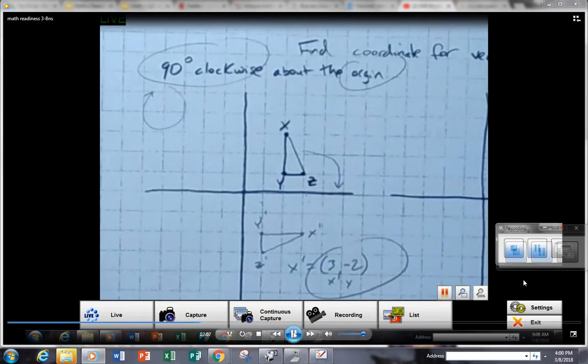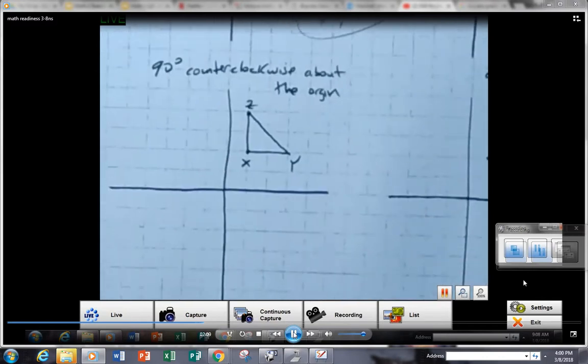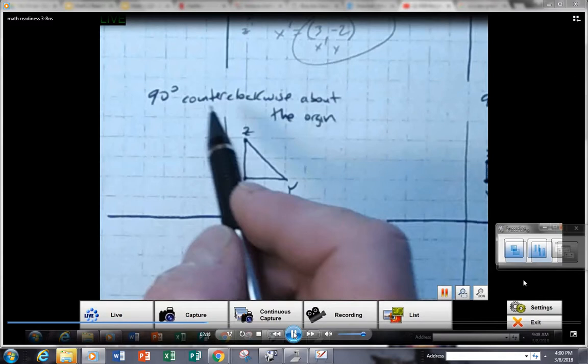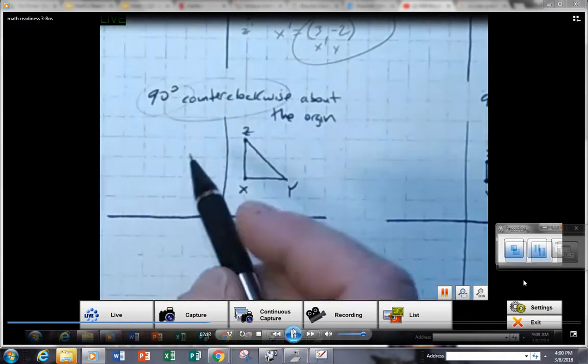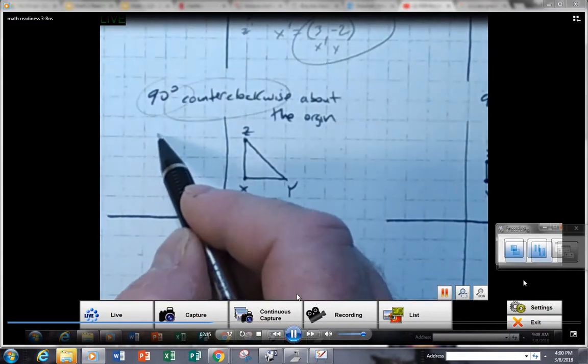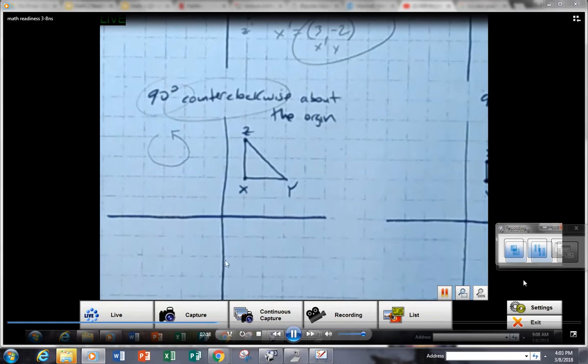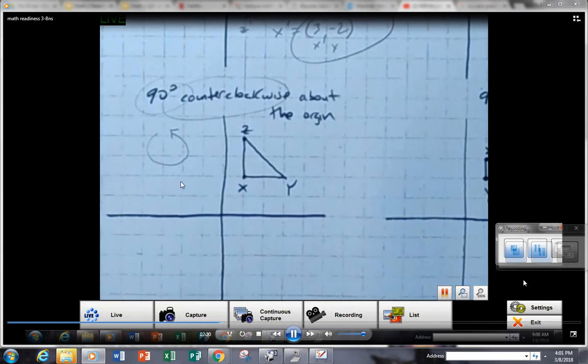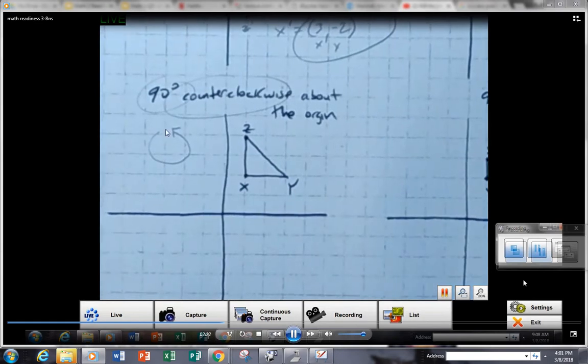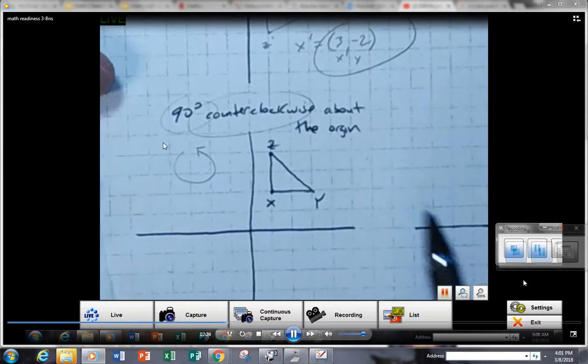And again, that is a quarter turn to the right. All right, the one underneath. Again, I'm going for this one, 90 degree quarter turn, but I'm going against the clock. I'm going counterclockwise to the left. So make sure you know the difference between clockwise to the right and counterclockwise to the left.